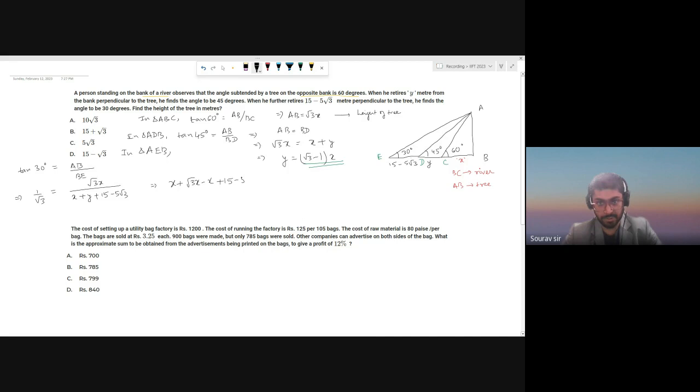Root 3 times root 3 X will be 3X. This X cancels out, and we have 15 minus 5 root 3, so take 5 common. We're going to end up with 3 minus root 3, and that side we have 3X minus root 3 X. So take X common, we're going to have 3 minus root 3 times X. This entire thing will cancel out, and you're going to have X equals 5.